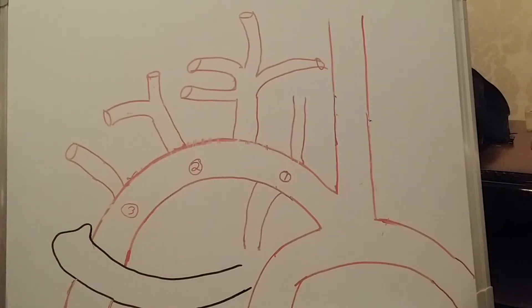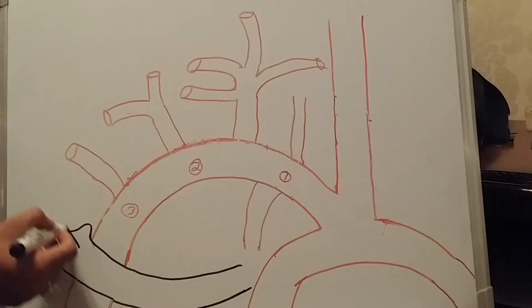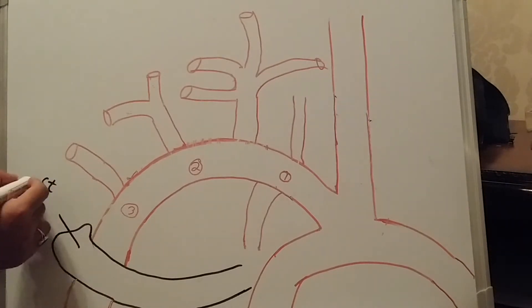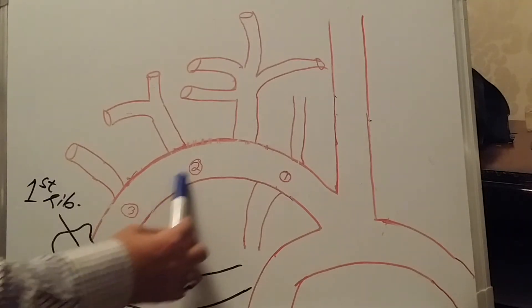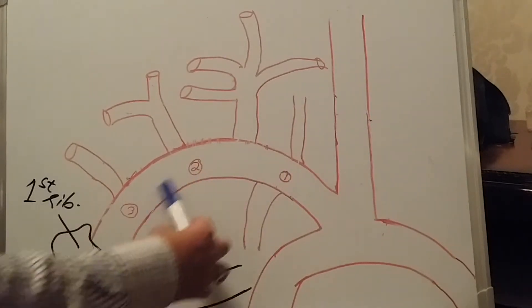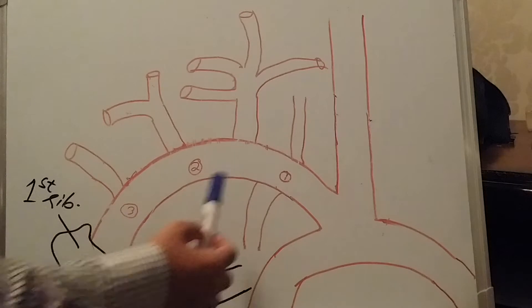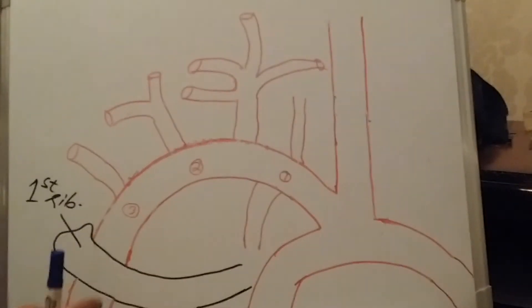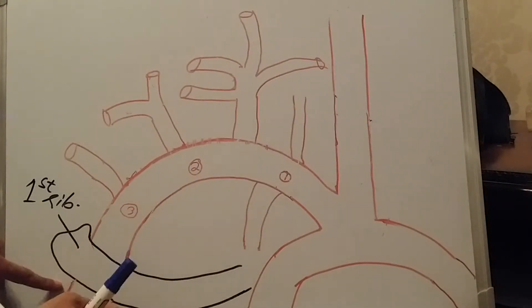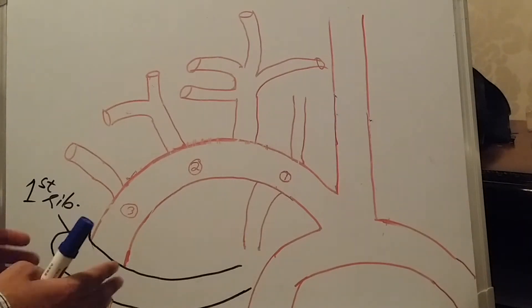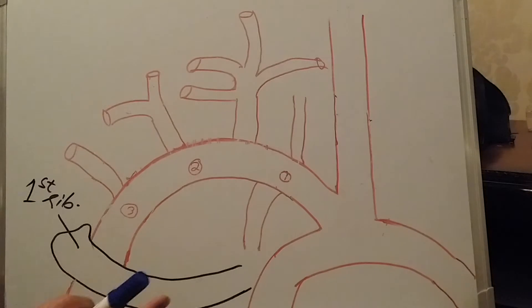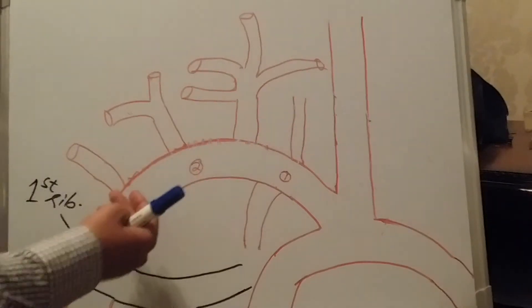This here is the first rib. I included the first rib because before the first rib the artery is known as the subclavian artery, and after the first rib the subclavian artery moves downward toward the axillary side of the body and is then known as the axillary artery. The axillary artery has its own branches and positions, similar to the subclavian artery.